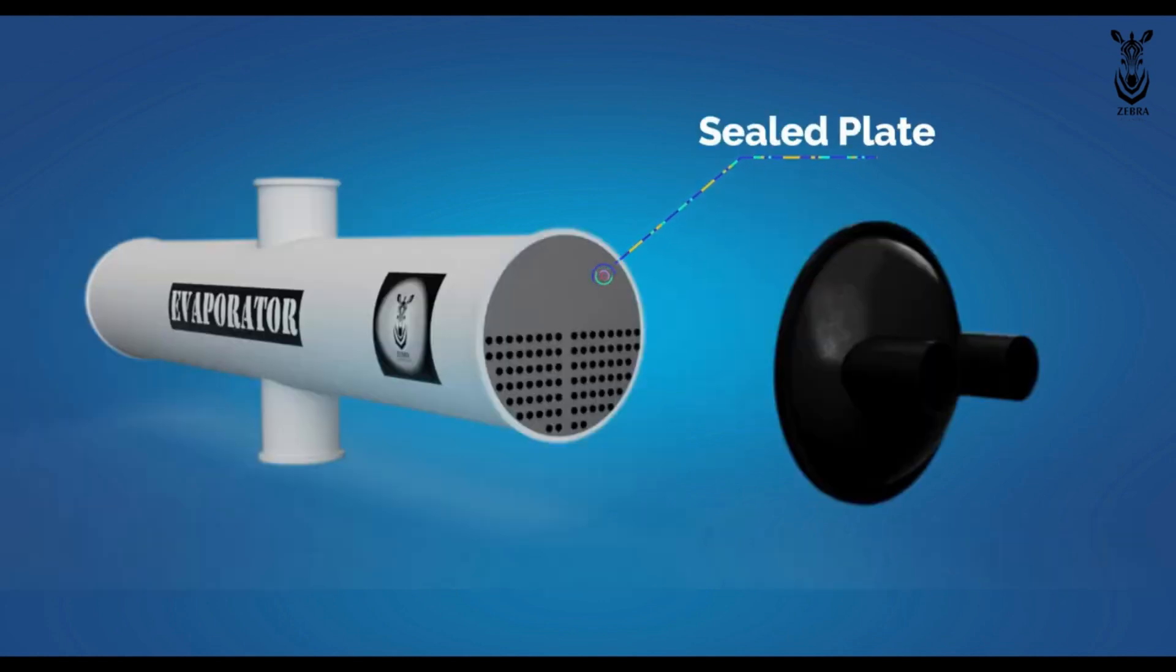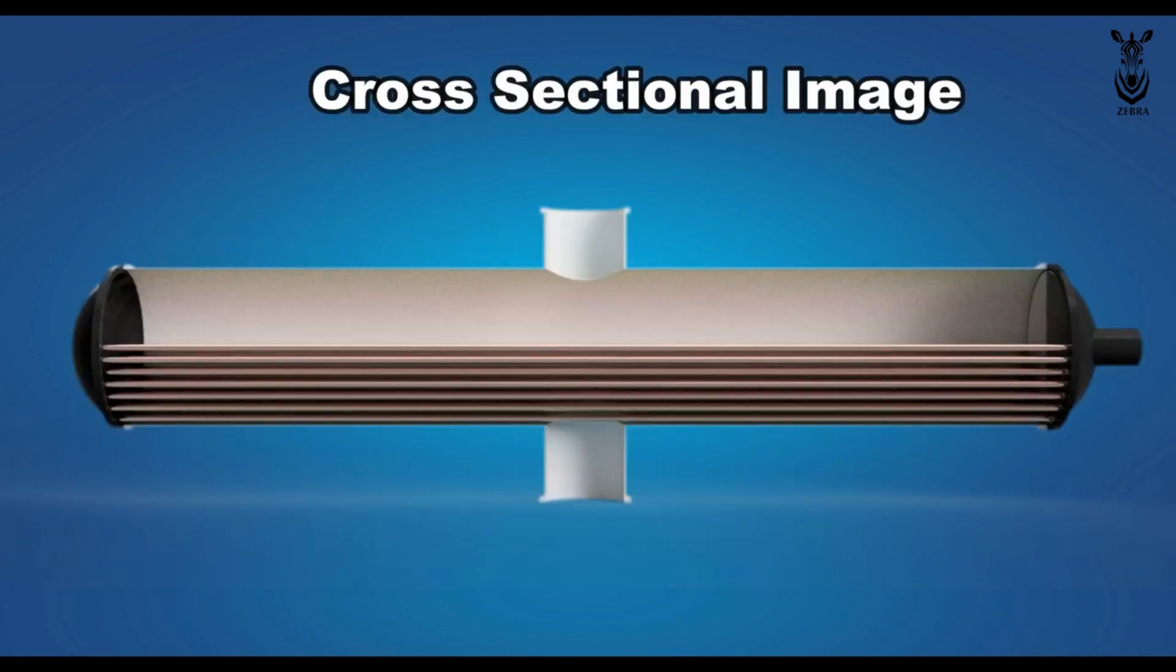Both ends of the evaporator are sealed by a plate to prevent refrigerant leakage. This is a cross-sectional image of the evaporator.